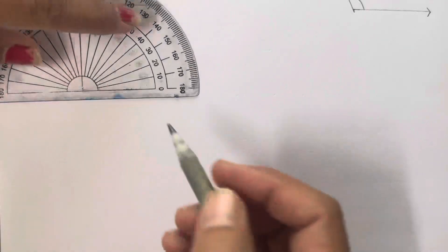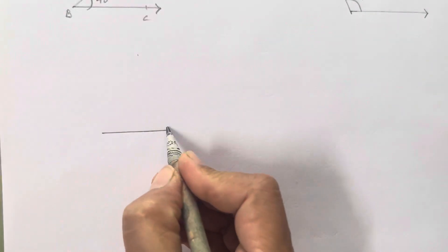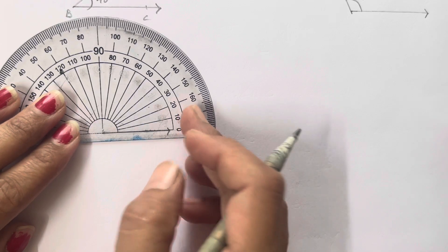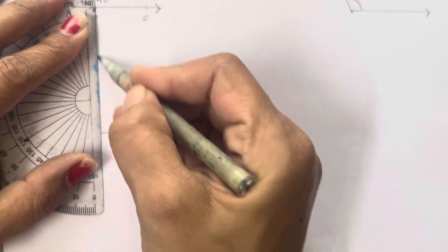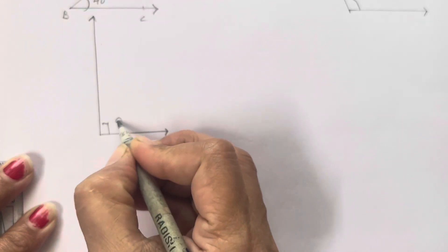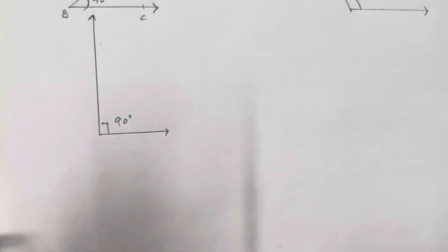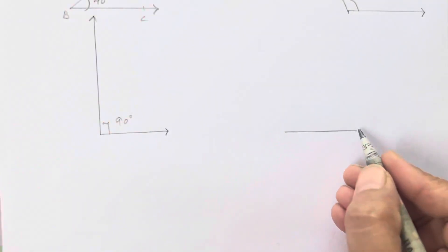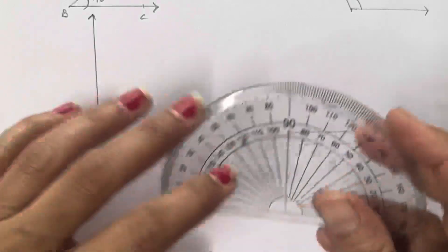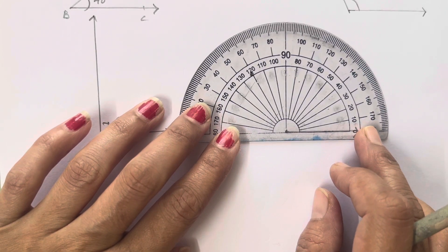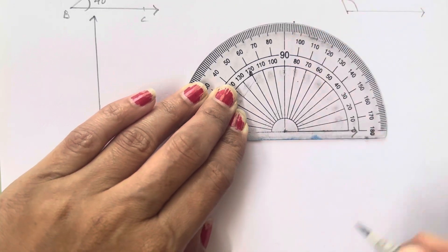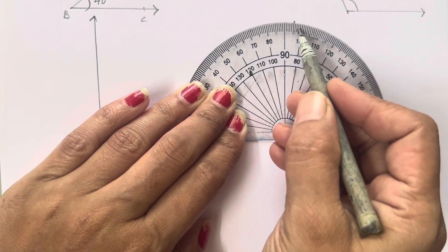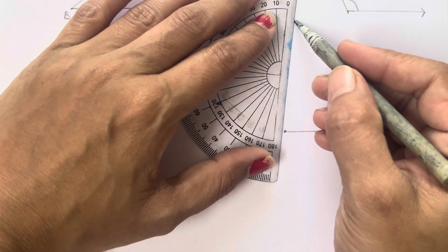For the 90 degree angle, align zero degrees, mark at 90, join it — that is your 90 degree angle. Next is 85 degrees. A different figure orientation is given in the textbook, but the teacher only checks the angle measure. Place zero degrees, count 80 then 5 more marks to get 85, and join the line. That gives you the 85 degree angle.